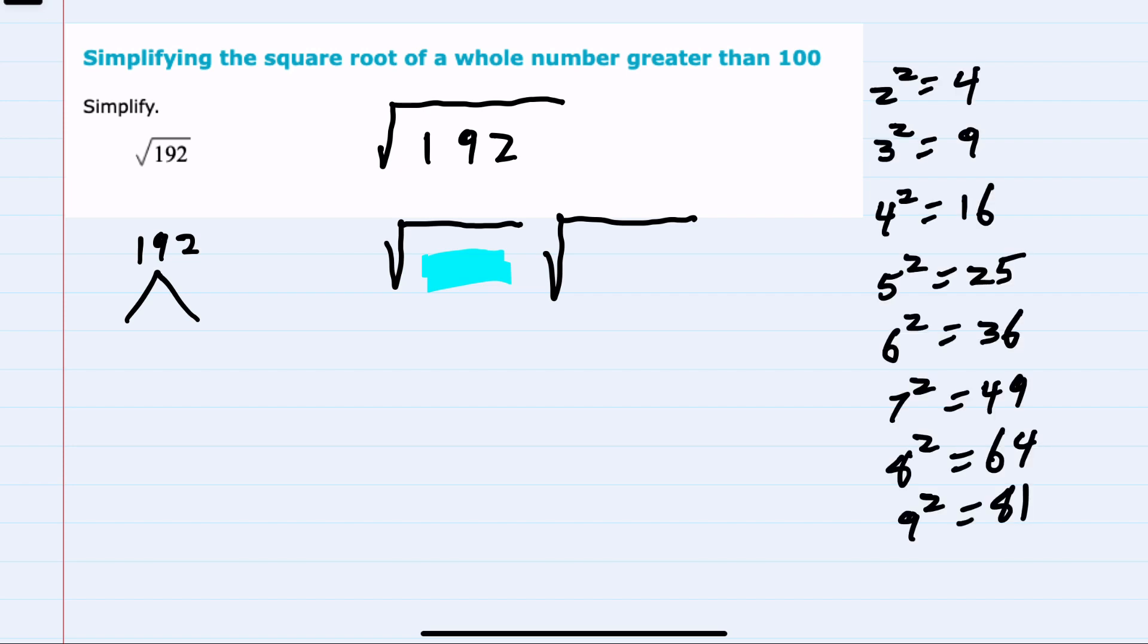And this is where it's helpful to memorize some of the smaller perfect squares and to see if we can rewrite 192 with any of these as a factor. And the one that stands out to me is 8 squared, which is 64.